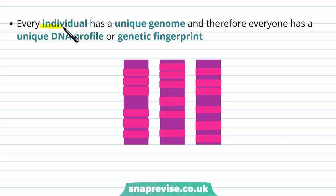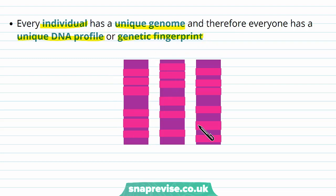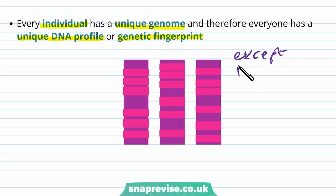Every individual organism has a unique genome, and therefore everyone has their own unique DNA profile or genetic fingerprint. So your genetic fingerprint will look different to somebody else's. The only exception is if we have identical twins.